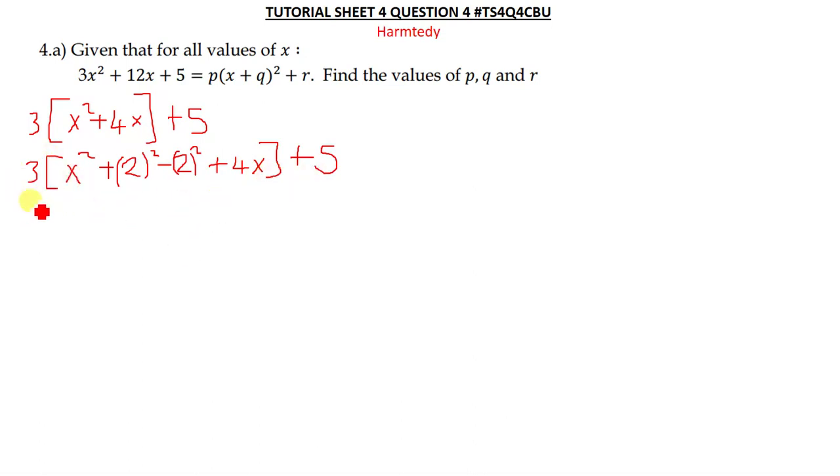So from here we can now complete the square. We're going to have something like this: x plus 2, and then squared minus 4, then we close the brackets plus 5.